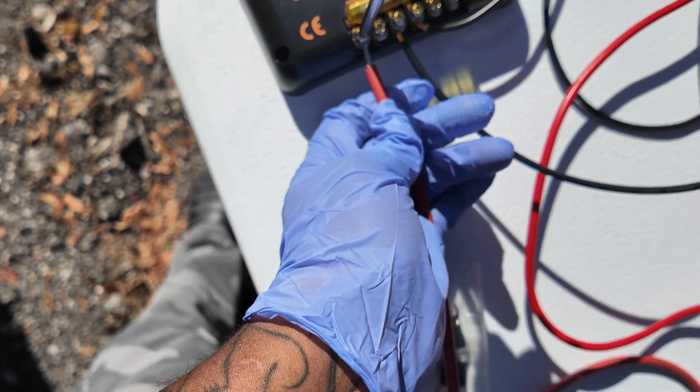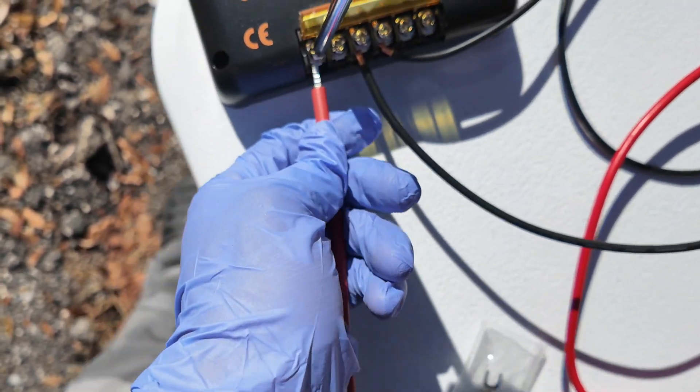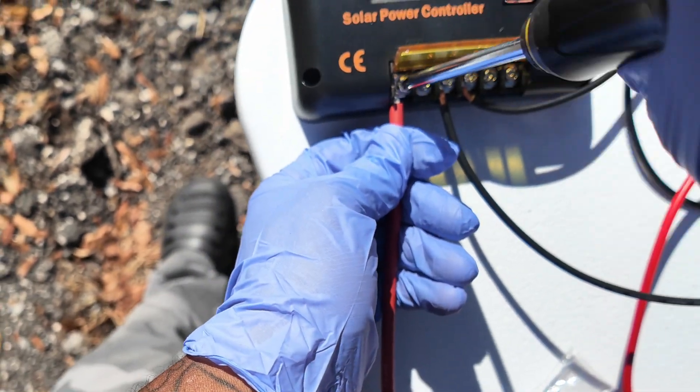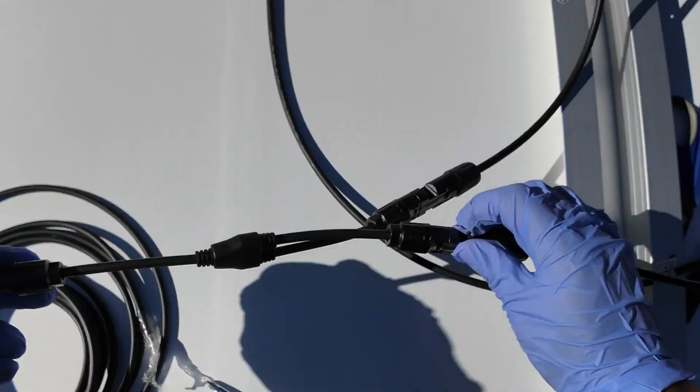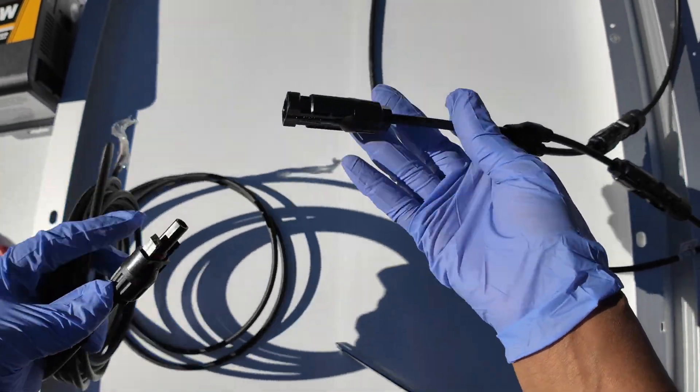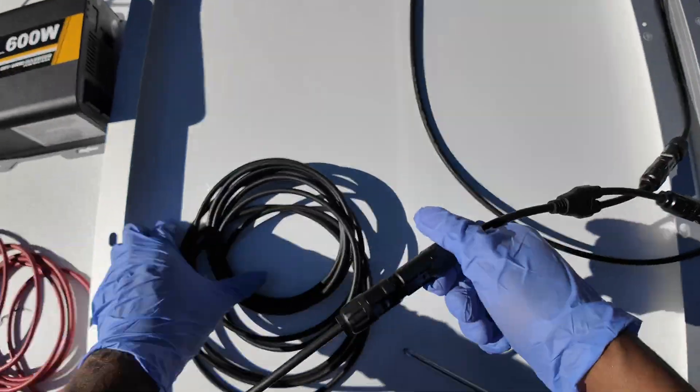In addition to the solar extension cables, you'll also receive Z brackets, which will allow you to flat mount your panels on your RV, your van, your boat, or home roof. EcoWorthy also has adjustable tilt mounting brackets as well as solar tracking systems that you can purchase from their website.